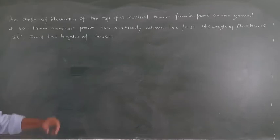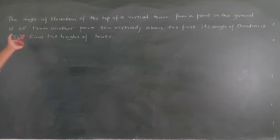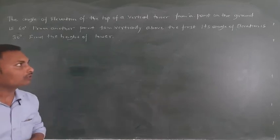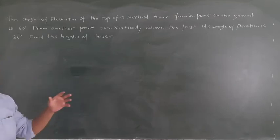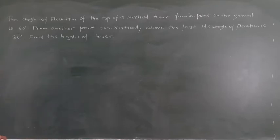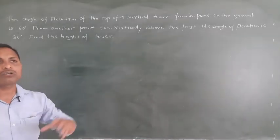Let me read this question one more time. The angle of elevation of the top of a vertical tower from a point on the ground is 60 degrees. From another point 10 meters vertically above the first, its angle of elevation is 30 degrees. Find the height of the tower. So we are given 10 meters vertically above the first, 60 degrees and 30 degrees. First of all, we need to draw the figure.